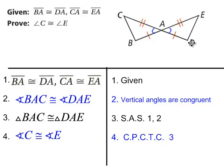Triangle BAC is congruent to triangle DAE. And once you've established that these two triangles are congruent, then you can say all their corresponding parts are congruent. So you could say angle C is congruent to angle E, angle B is congruent to angle D, and CB is congruent to ED.